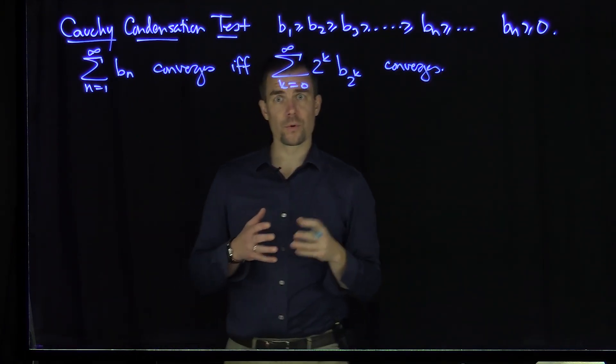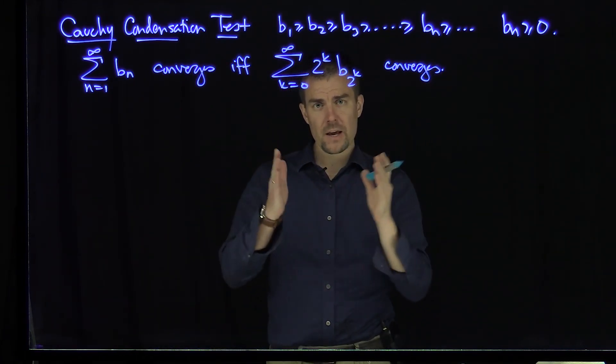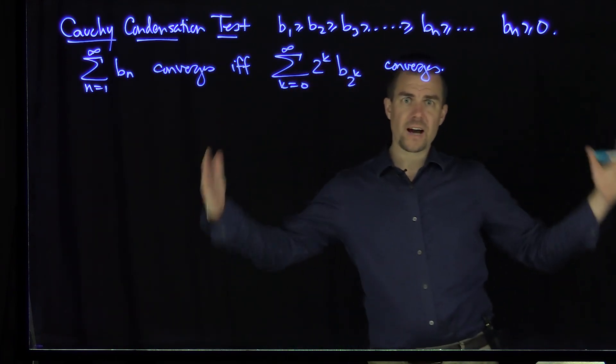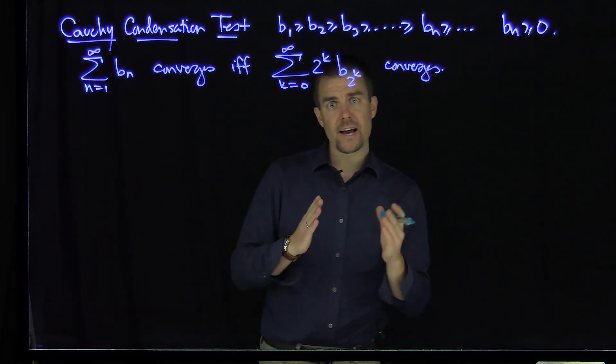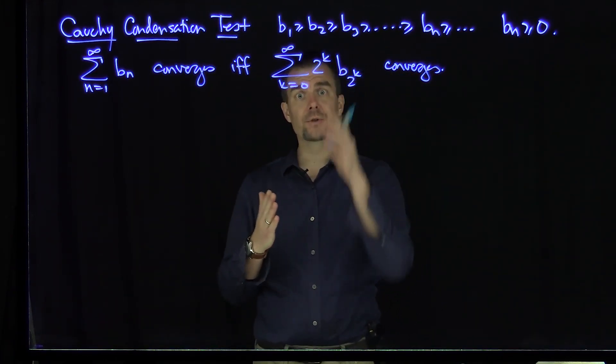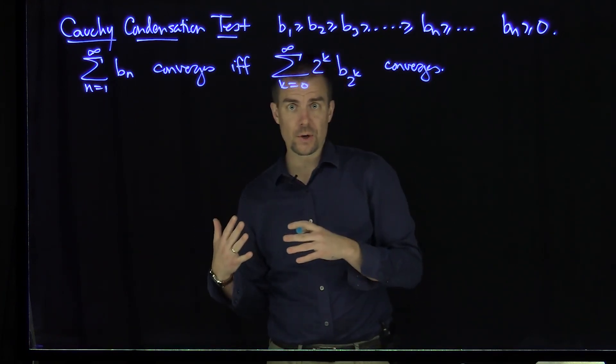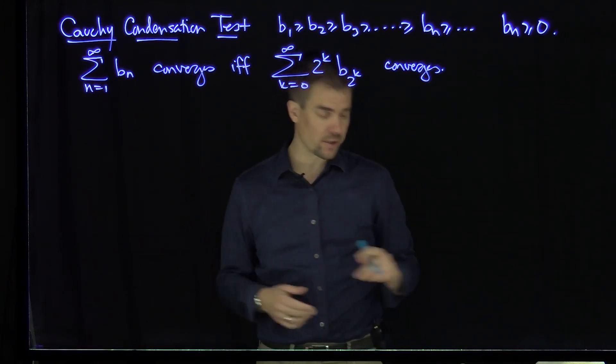So the idea behind this is we're going to take the sequence Bn and split it into dyadic chunks, and at each of these dyadic chunks, I'll be able to use the decreasing sequence property to estimate one series in terms of the other series.